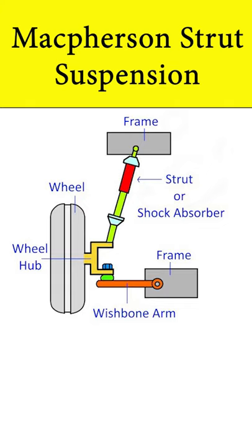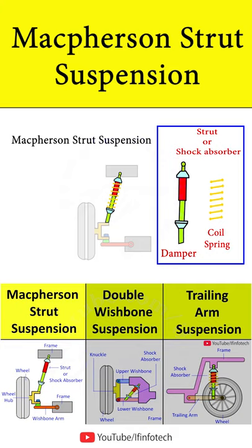In today's session, we will learn about types of suspension system. I will start with the MacPherson strut system. It consists of a strut or shock absorber which includes a coil spring and damper.